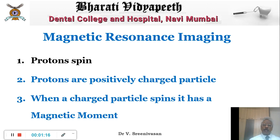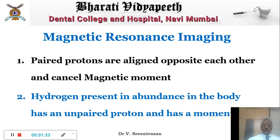When there are paired protons, they spin in opposite directions — one spins clockwise and one spins anti-clockwise — and they cancel out their magnetic moment. But when you have an unpaired proton, there is some net magnetic moment. Hydrogen is present in abundance in our body and it has an unpaired proton. This unpaired proton lends to our body the potential for a magnetic moment.